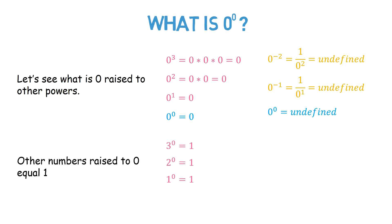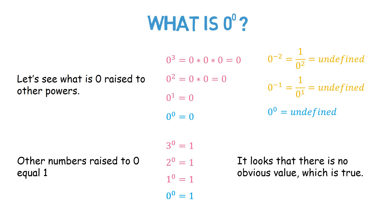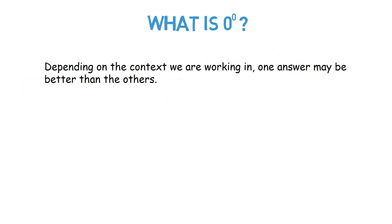Other numbers raised to 0 equal 1, and this pattern implies that 0 raised to 0 should be 1. It looks like there is no obvious value of 0 raised to 0, which is true. Depending on the context we are working in, one answer may be better than the others.